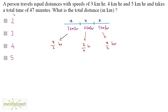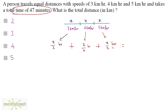We have been given the total time it takes for this person to travel all the distances. If we add up all of these times, we get 47 minutes. But these times are in hours, so we have to convert 47 minutes into hours by dividing by 60 — giving 47 divided by 60.